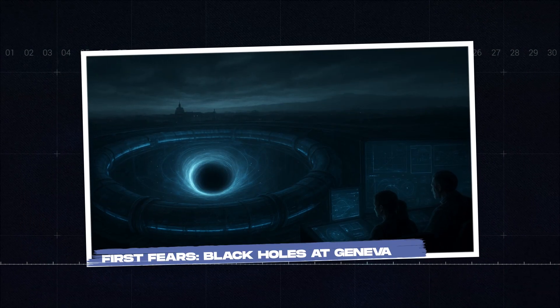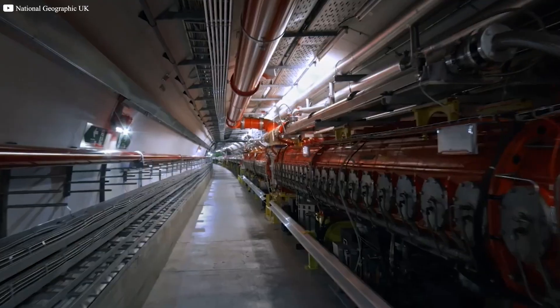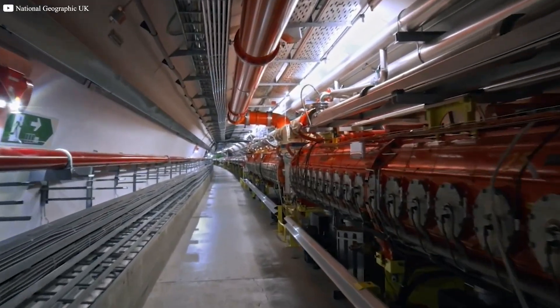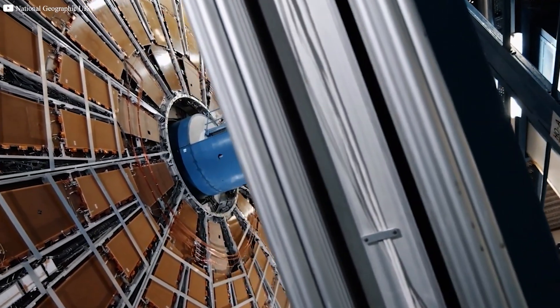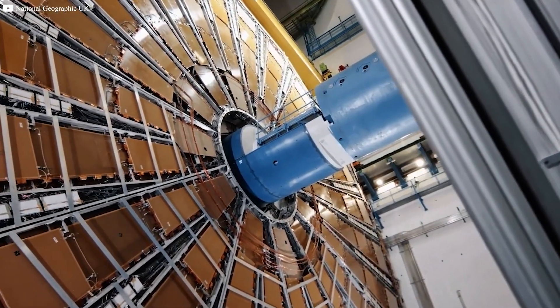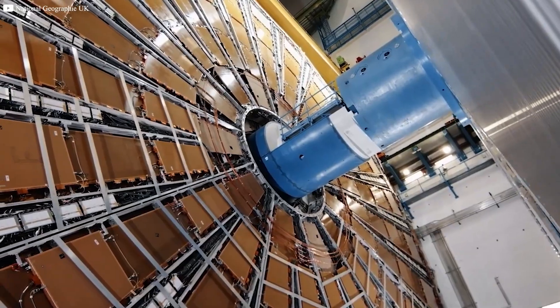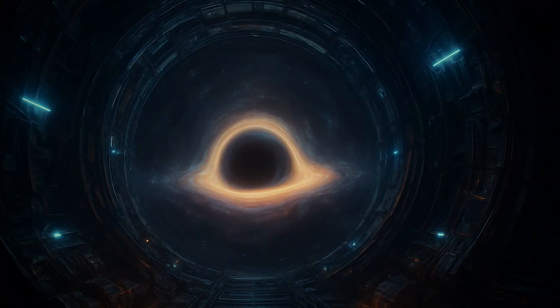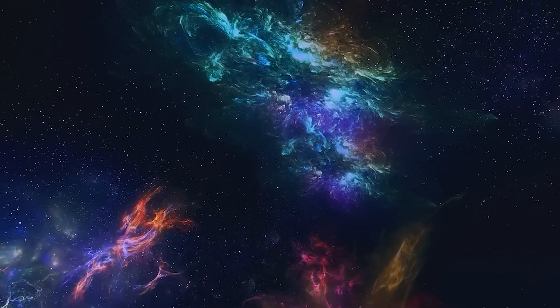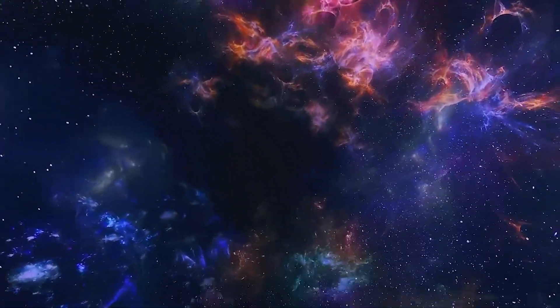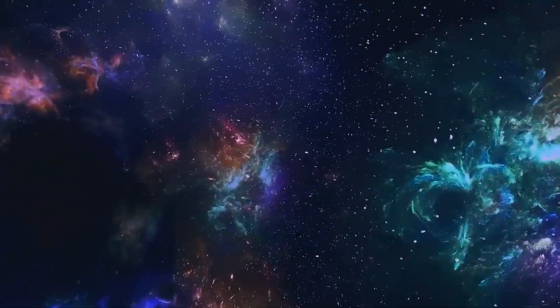First fears: black holes at Geneva. When the first tunnels for the collider were dug, not everyone was excited. A few scientists worried that smashing protons at such speeds might open doors we were not ready for. One of them was Martin Rees, a respected British astrophysicist. He warned that the collider could create microscopic black holes. These would not form from collapsing stars but from energy squeezed into a tiny space. The idea was not new.